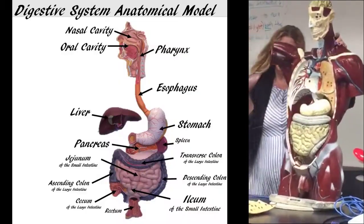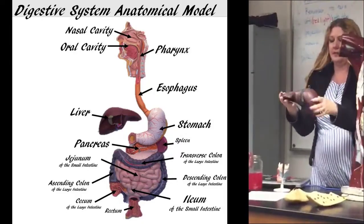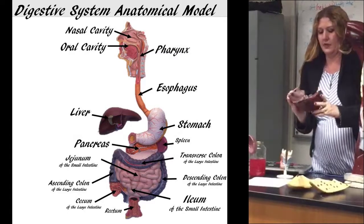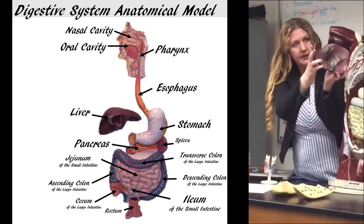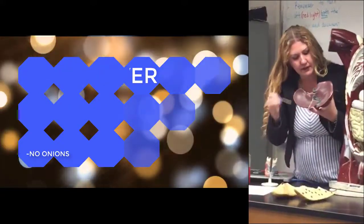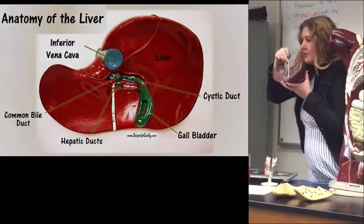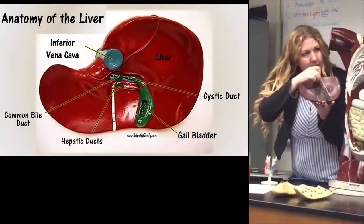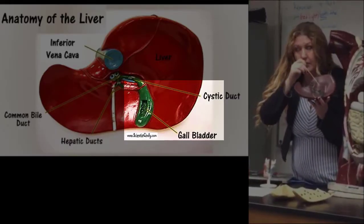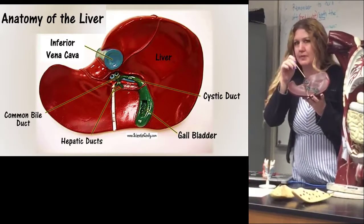I'm going to take off the liver. There's really not much need to know about the outside of it — all the good stuff is on the inside. The liver functions to make bile. This greenish thing down here is the gallbladder. So the liver is going to make the bile, and the gallbladder is going to store and concentrate that bile.